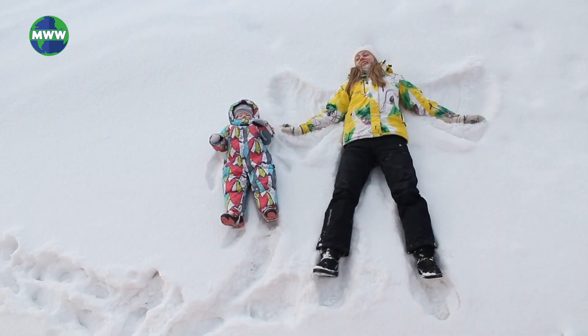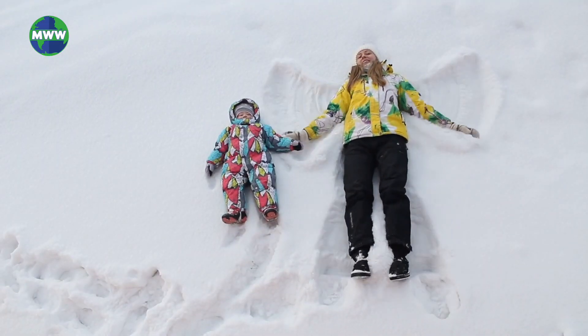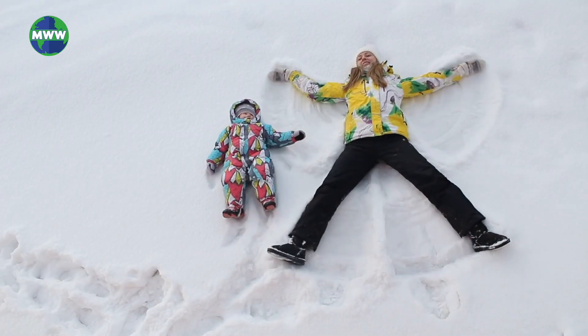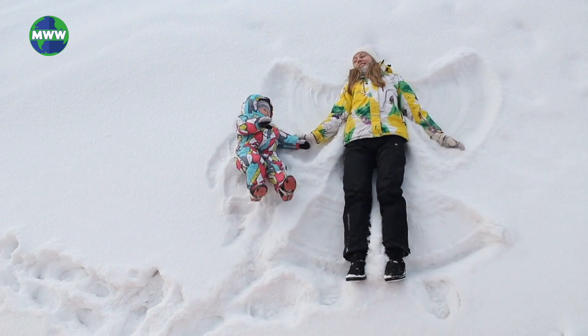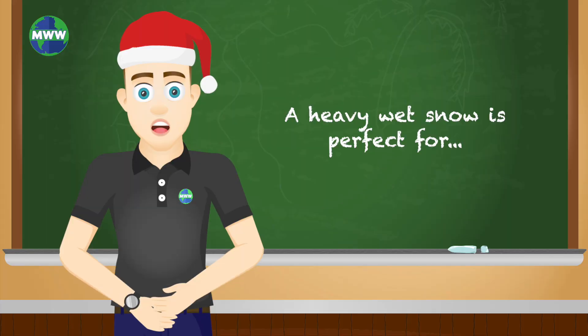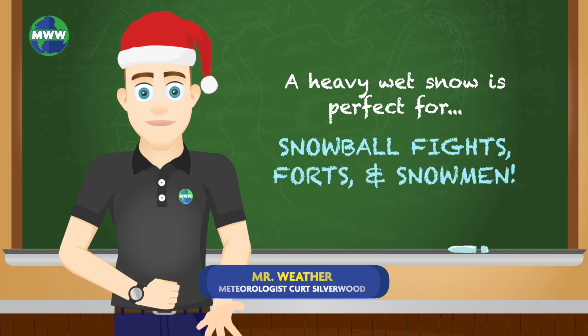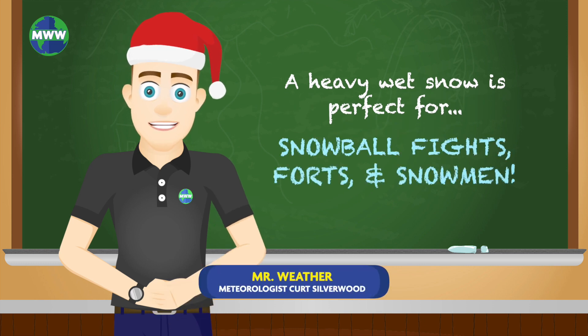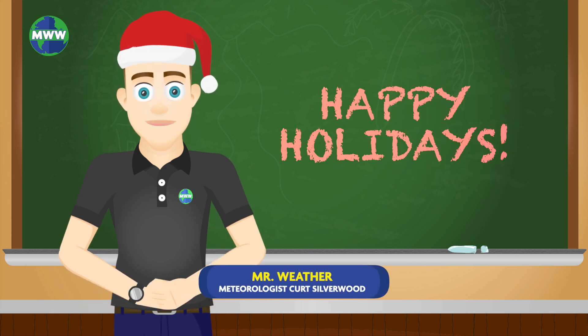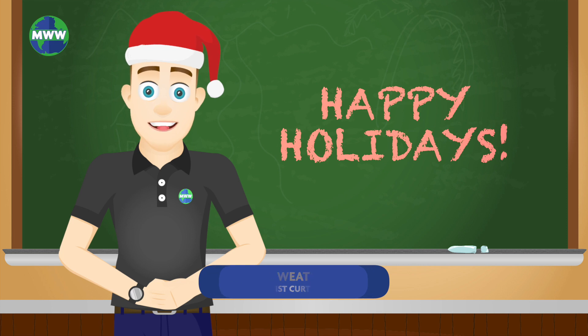If surface temperatures are below freezing and the air is moist, heavy wet snow will land on the ground. If the air is very cold, then dry powdery snow will fall. The ideal snow that all kids look forward to is a heavy wet snow — perfect for snowball fights, sports, and snowmen. Enjoy your winter, and happy holidays!